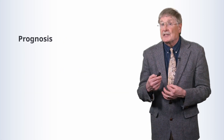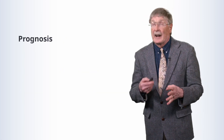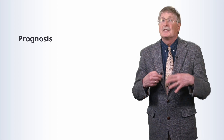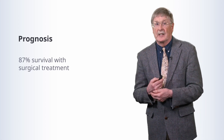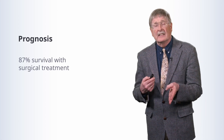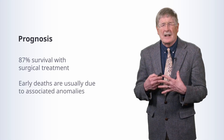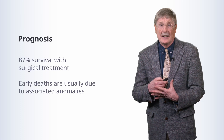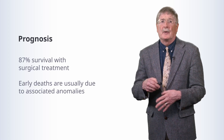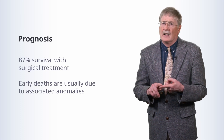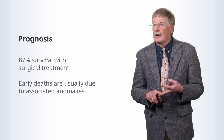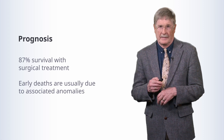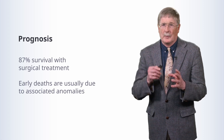The prognosis, if we do everything we're supposed to do and recognize the entity early, is quite good with surgical treatment. In fact, the early deaths are usually not associated with the esophageal or tracheal anomalies, but rather due to the other associated anomalies — the heart defects, the renal defects, etc. And with that, we finish tracheoesophageal fistula and esophageal atresia.